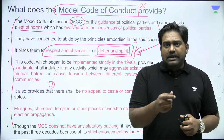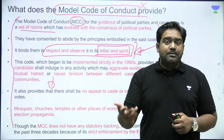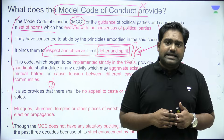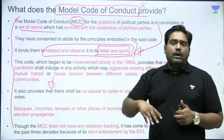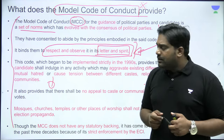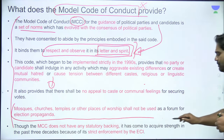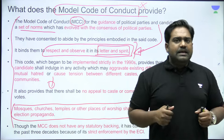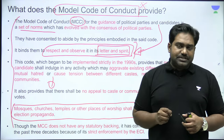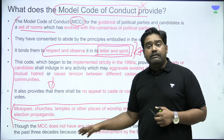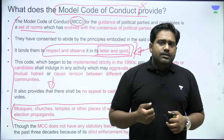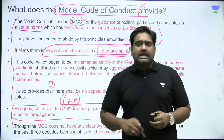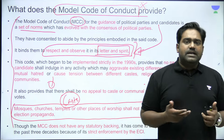Especially when it comes to seeking votes in the name of religion or candidates promoting hatred or enmity, the Election Commission can debar them from campaigns and even from contesting the election itself by invoking Section 123 of the Representation of the People Act. The Model Code also says that places of worship — mosque, temple, church — should not be used for electoral purposes. This is something most commonly violated in India for many decades, and yet the Election Commission has not been effective in all these instances.